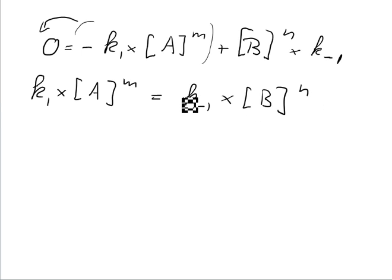And what we can do now is we can bring all the rate constants to one side and all the concentrations to the other side. So what we get is K-1 over K-1 equals B to the power of N divided by A to the power of M.